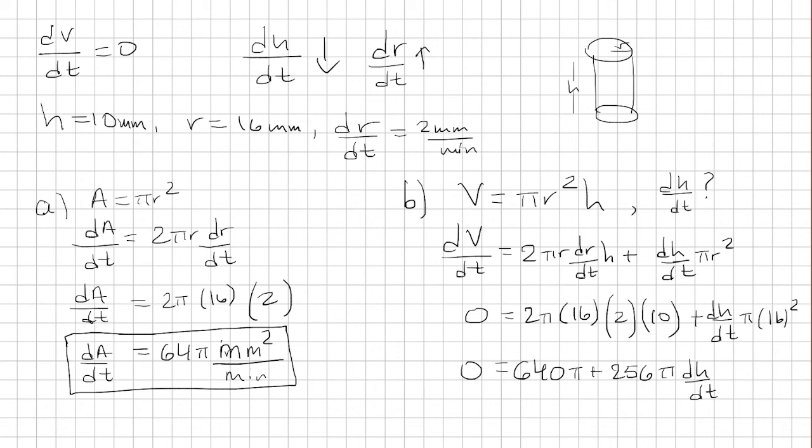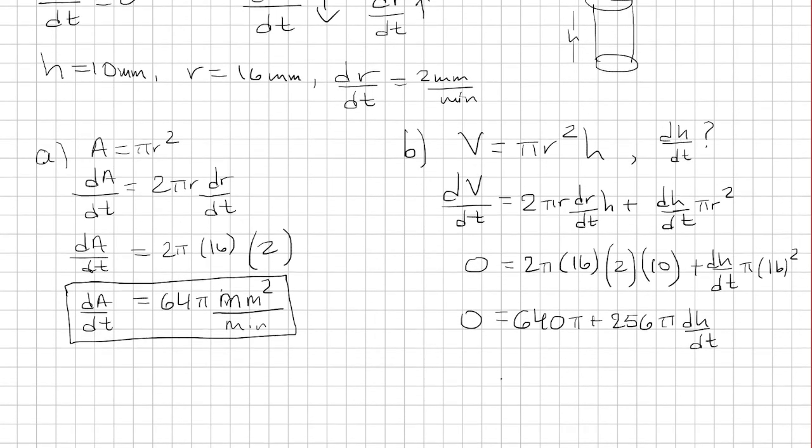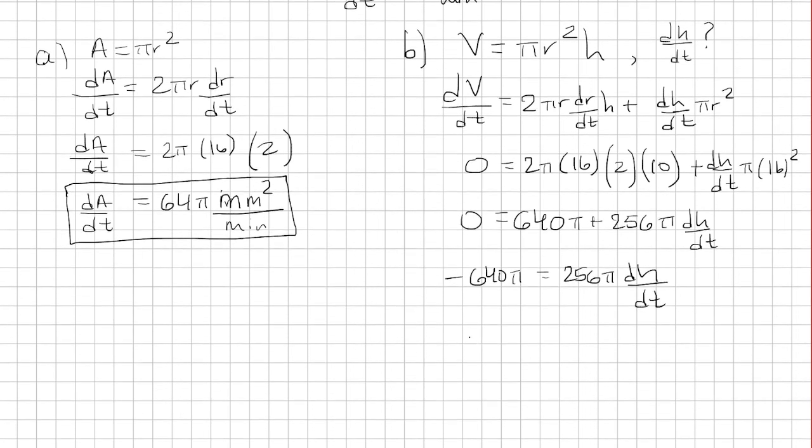Finally, I can subtract both sides by 640π. And then I want to solve for dh/dt, so that means I'm going to divide both sides by 256π.